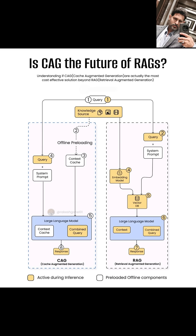When a query arrives during inference — marked in yellow as active during inference — it's combined with a system prompt and directly fed into a large language model. This LLM then consults the context cache to augment its understanding and generate a response. The crucial point is that the retrieval of relevant context happens much faster because it's already readily available in the cache. The offline preloading step is where CAG aims to gain efficiency. By anticipating potential information needs and storing them in the fast-access context cache, CAG can potentially bypass the more computationally intensive embedding and vector search steps during the live query.